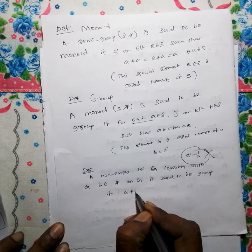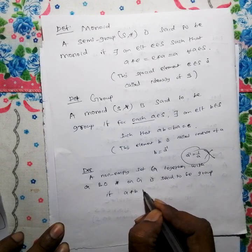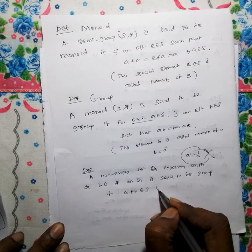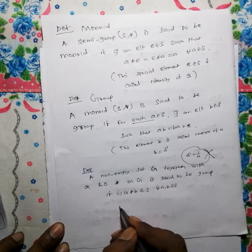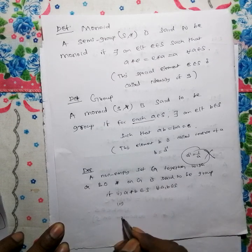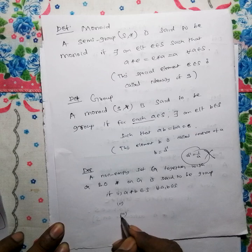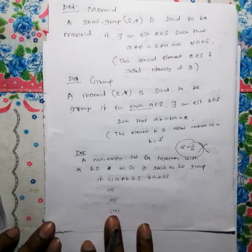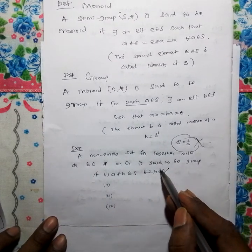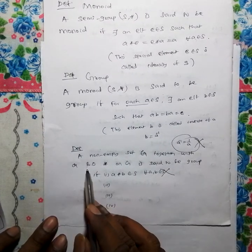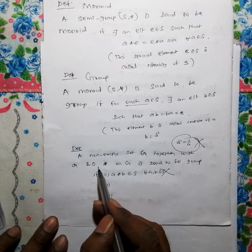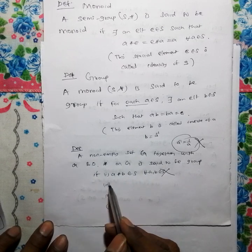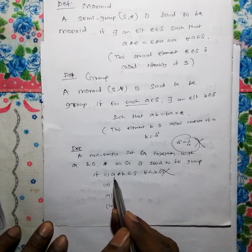If A star B belongs to S for every A, B belonging to S — closure property — then the conditions for a group follow. A non-empty set with binary operation satisfying closure is the first condition.